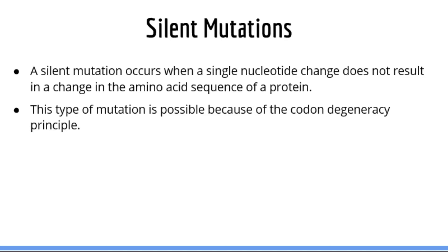First, let's talk about silent mutations. Silent mutations occur when a single nucleotide change does not result in a change in the amino acid sequence of a protein. This is possibly because of codon degeneracy. Codon degeneracy refers to the principle that many different codons can code for the same amino acid. For example, the codons CUU, CUC, CUA, CUG, UUA, and UUG all code for the same amino acid, leucine.